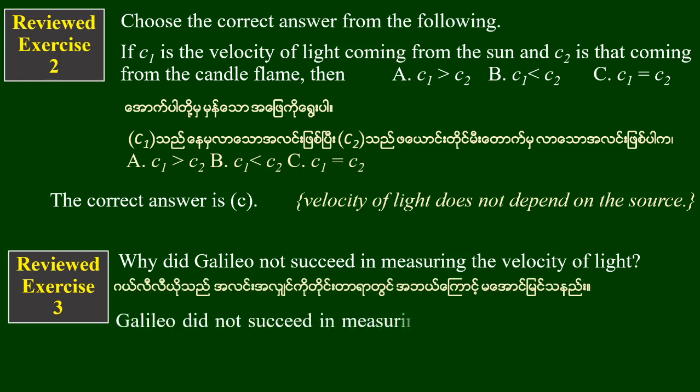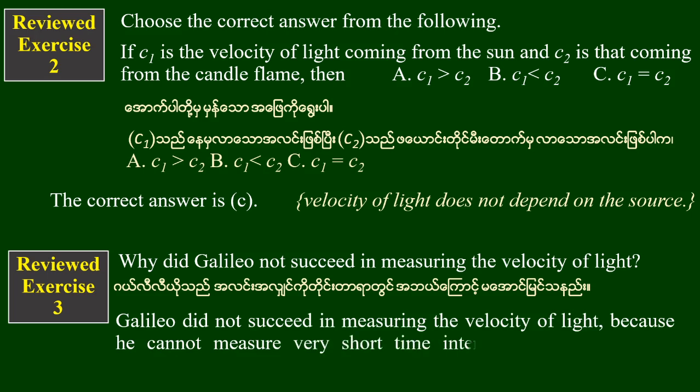Galileo did not succeed in measuring the velocity of light because he could not measure the very short time interval for traveling light exactly.